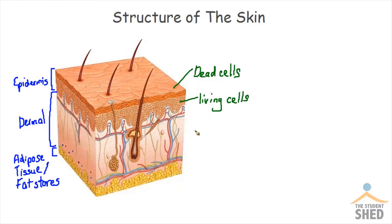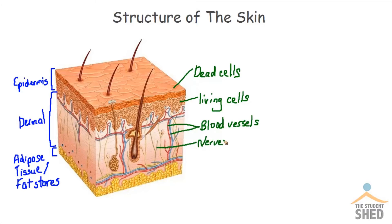In the dermal layer we'll see there's a variety of things, including blood vessels. There are also nerves inside the dermal layer, and these nerves end in sensory nerve endings. So when you touch something hot and you quickly move your hand away,